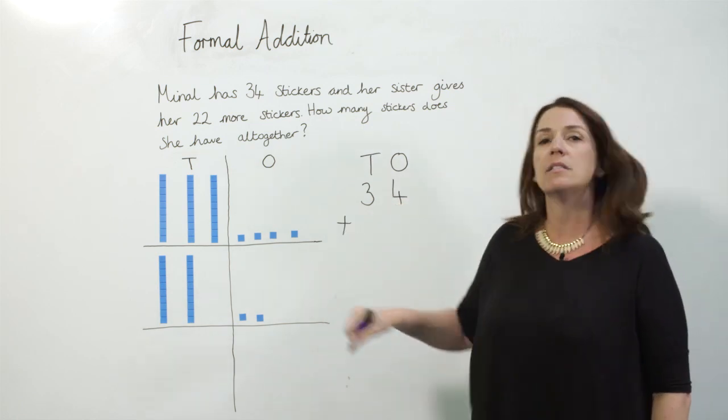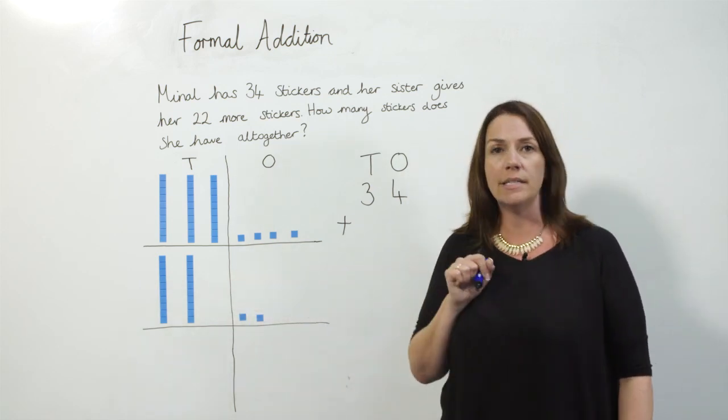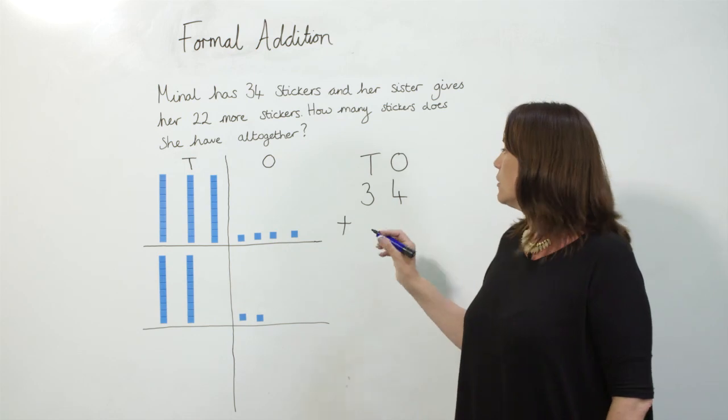And then underneath you can see we're adding 22 and in the place value chart I have my 22 with the base 10 so I'm going to add that into the column underneath.